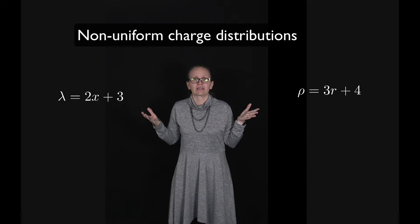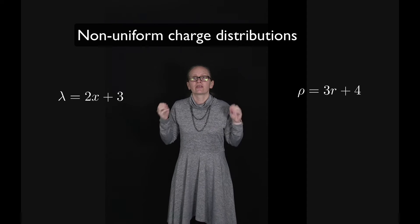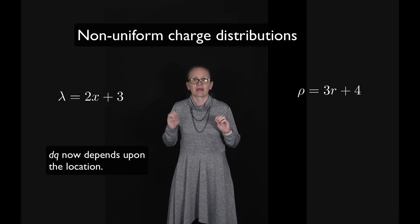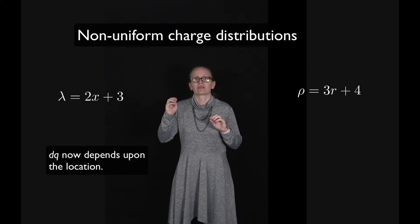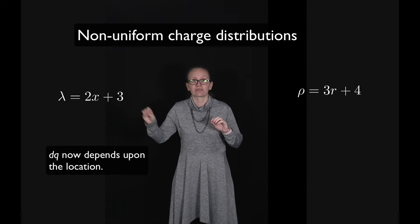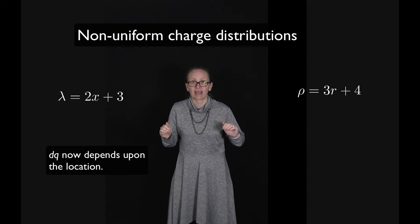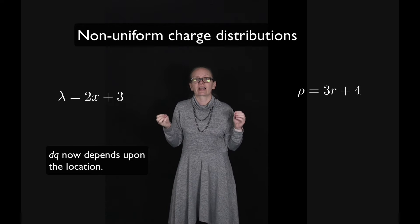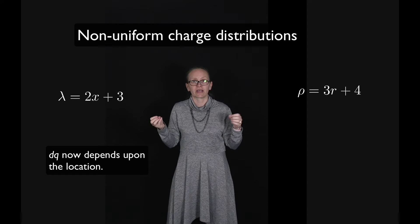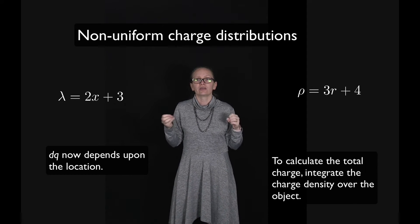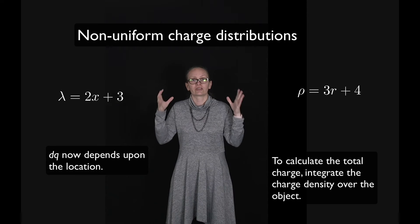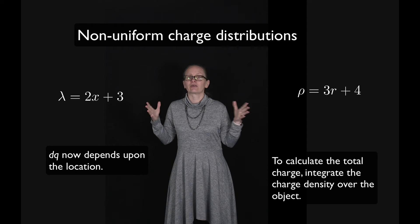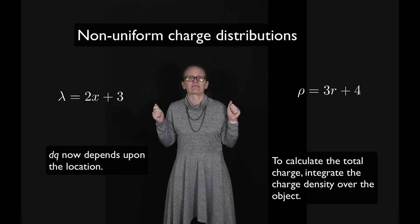If we wanted to calculate the electric field in this case, the method is very similar to the uniform case, except that dq depends upon the location we're considering. You can also be asked to calculate the total charge on the object, and to do that you need to integrate the charge density over the entire object.